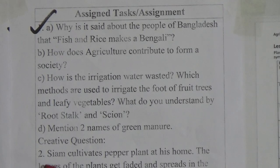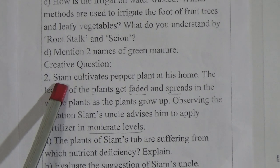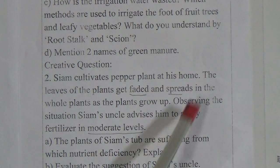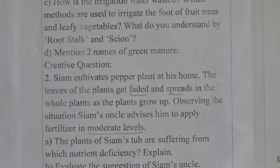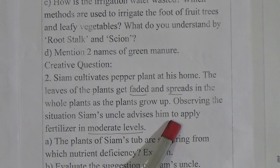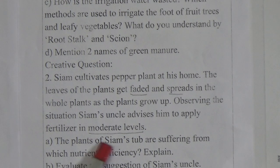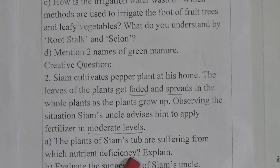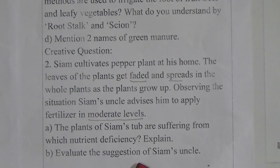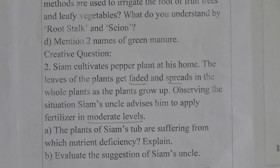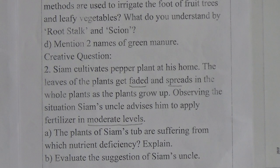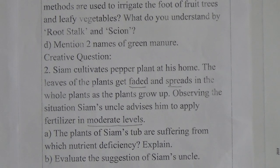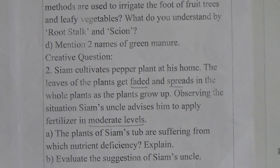There is a stem in question number 2. This is the creative question. Let's read: Siam cultivates plants at his home. The leaves of the plants get faded and the fading spreads throughout the whole plant as the plants grow up. Observing the situation, Siam's uncle advises him to apply fertilizer in moderate levels. There are two questions. Number 1: Which nutrient deficiencies are Siam's plants suffering from? Explain. Number 2: Evaluate the suggestion of Siam's uncle — that means, describe why and which fertilizer he should apply to the plants.